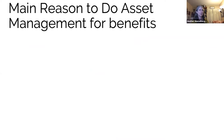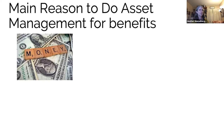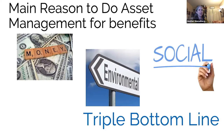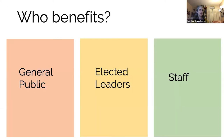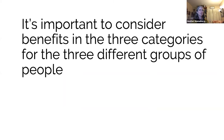The main reason to do asset management is for the benefits we can accrue. Benefits are categorized as financial, environmental, and social — we refer to that as the triple bottom line. Who benefits? The general public and your customers, your elected leaders and owners who have final decision-making power, and your staff. It's super important not to forget about staff as a beneficiary of asset management, because it's not all about the outside — it's about who's working for you as well.